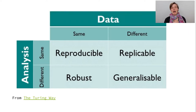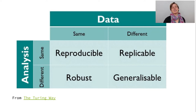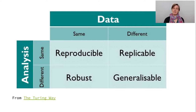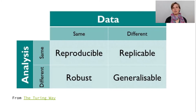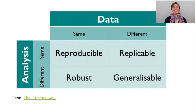Now what do I actually mean when I say reproducible? There are a lot of different definitions, and I'm taking the definition of the Turing Way, which is a really cool online book I can definitely recommend. There, we define reproducible as: with the same data and the same analysis, we get the same results. That is different from terms like replicable, robust, or generalizable, and it's actually probably the easiest part — so it should be the minimum standard that we have in science.